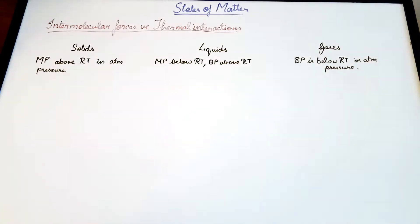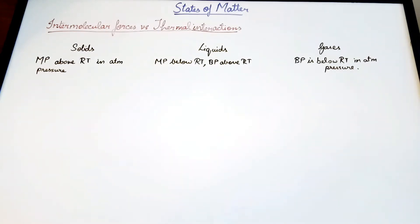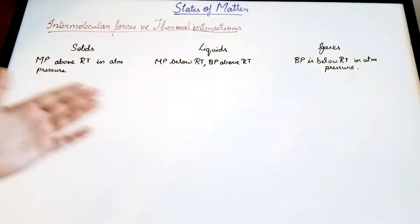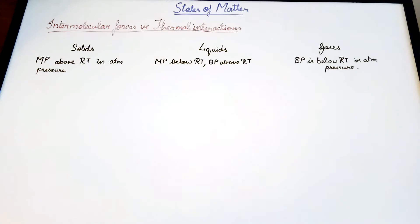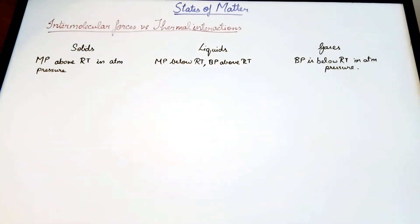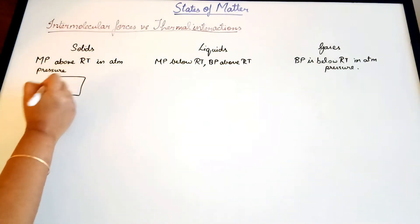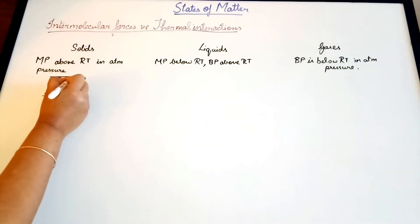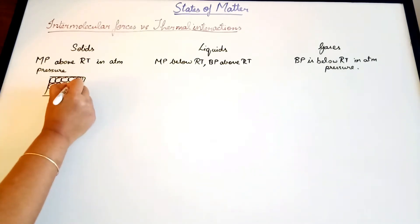Boiling point for gases is below room temperature. For example, hydrogen as a liquid has a very low boiling point — it's in the negatives. The point is it has a very low boiling point. Solids, liquids and gases also vary with respect to their intermolecular forces.